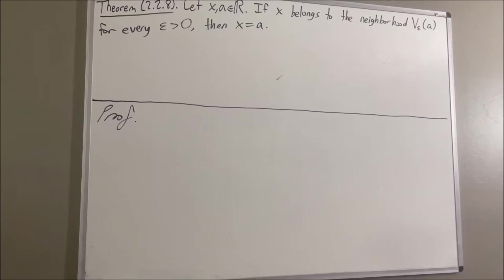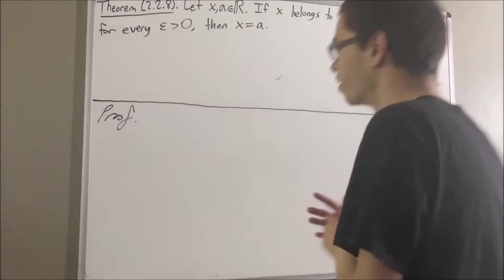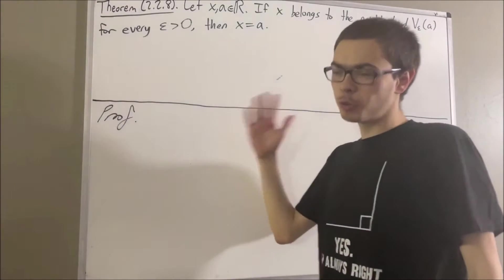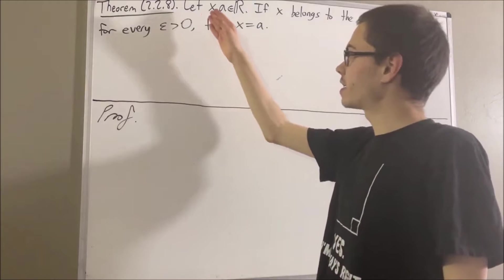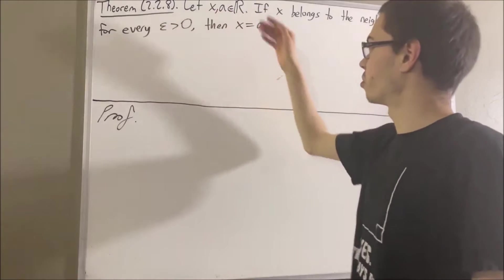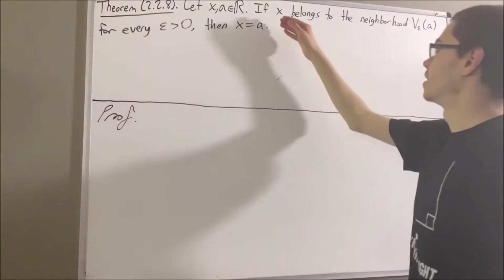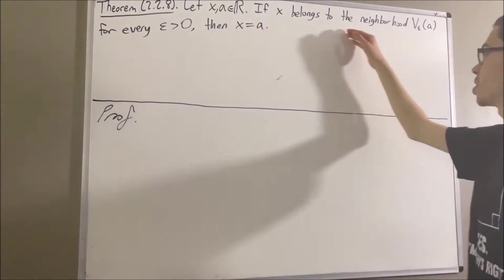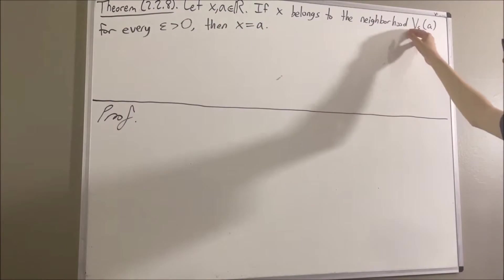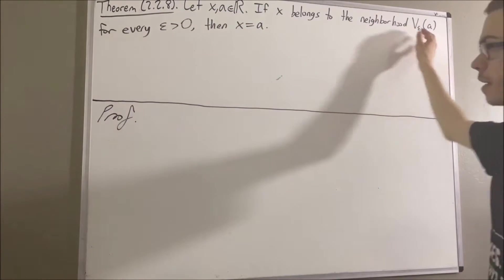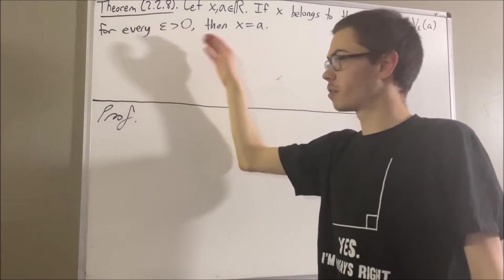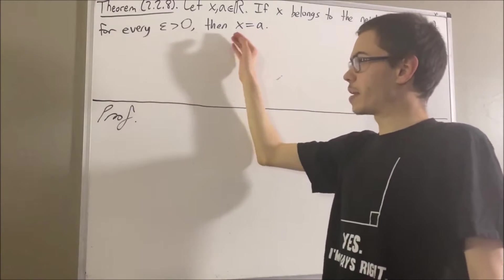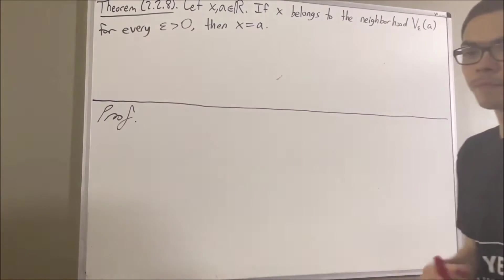In this video, we are going to prove the following theorem. Let x and a be real numbers. If x belongs to the neighborhood v-epsilon of a for every epsilon greater than zero, then x is equal to a.